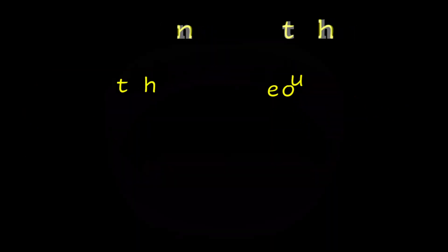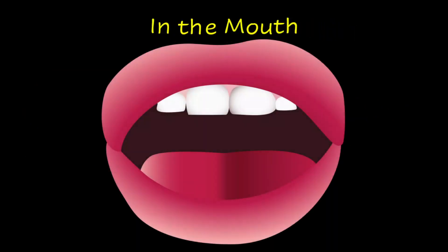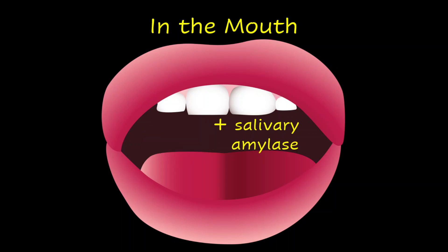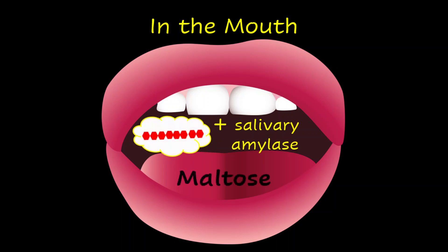Once starch is taken into the mouth, it is acted upon by salivary amylase, which is an enzyme. Starch is a polysaccharide and it will be converted to a disaccharide, which is maltose. A point to note: only some of the starch is being converted to maltose.